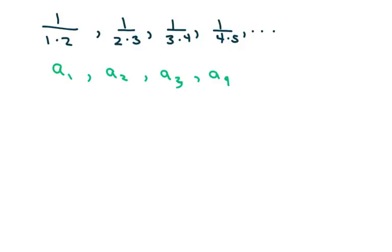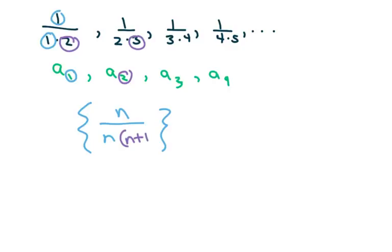So basically we notice these ones match, so if we do this, we're going to have n over n. And in this case this 2 and here is 1 bigger. So that would be n plus 1.